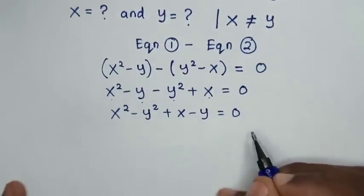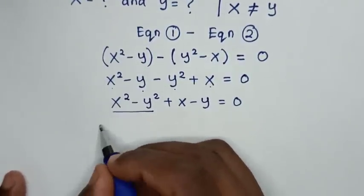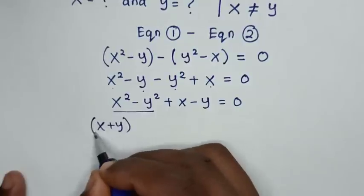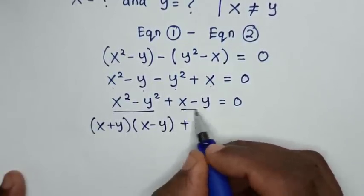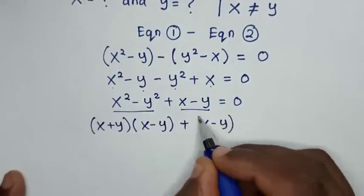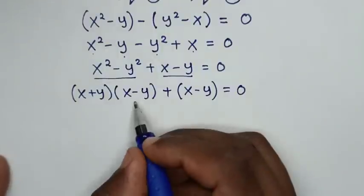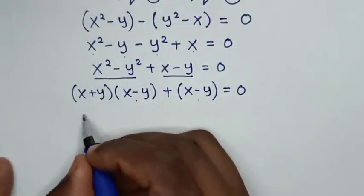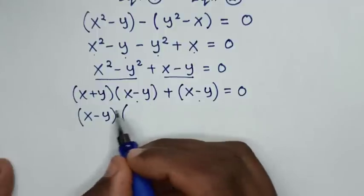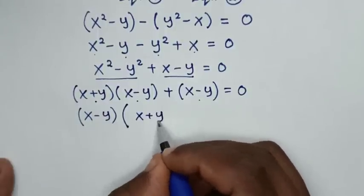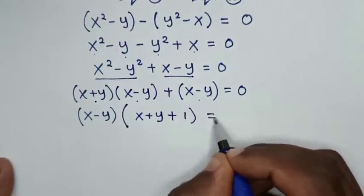In the next step, x squared minus y squared is a difference of squares, so it factors as (x plus y)(x minus y). Then plus this (x minus y) is equal to 0. In the next step, x minus y is common, so we factor it out: (x minus y)(x plus y plus 1) is equal to 0.